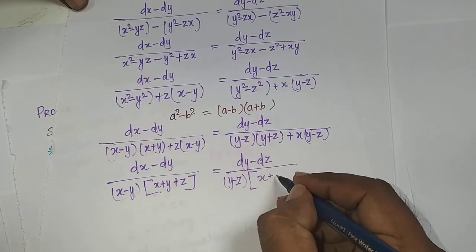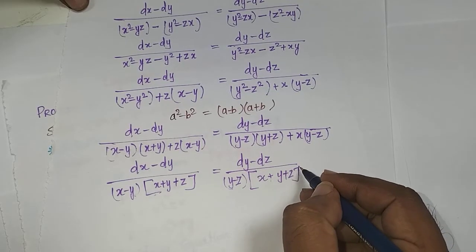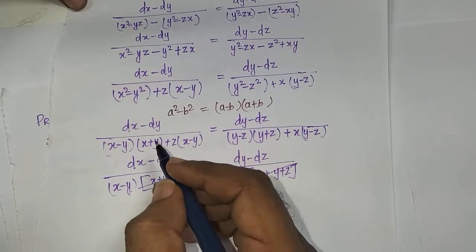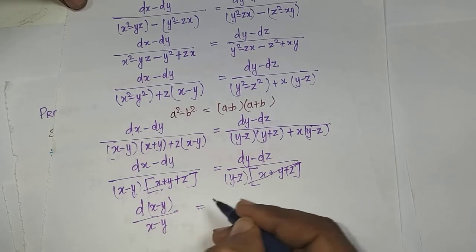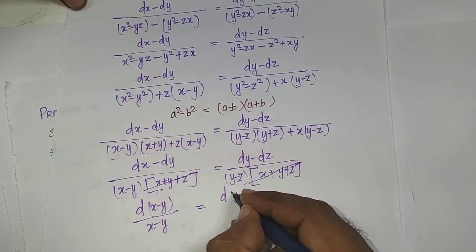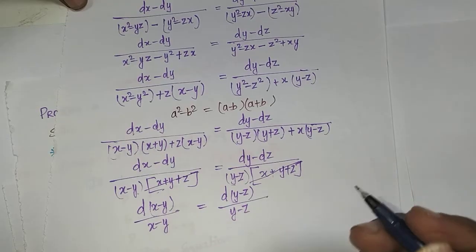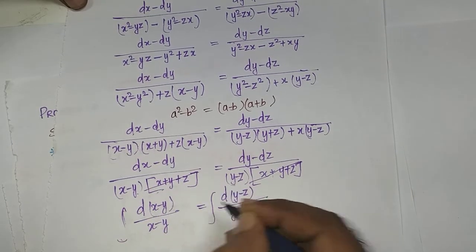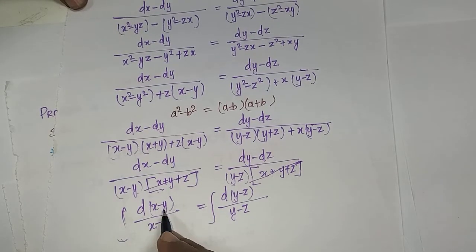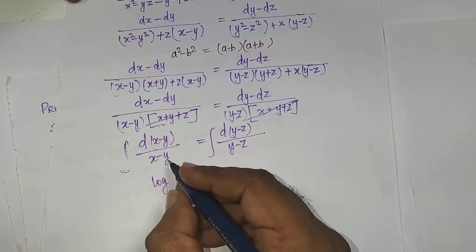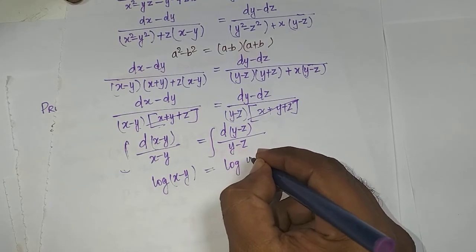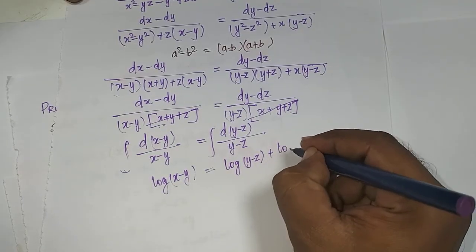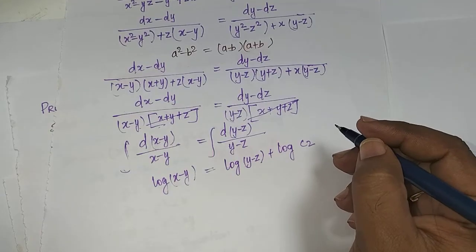Cancelling (x + y + z) from both sides: (dx - dy)/(x - y) = (dy - dz)/(y - z). Writing as differentials: d(x - y)/(x - y) = d(y - z)/(y - z). Integrating both sides: log(x - y) = log(y - z) + log C2.